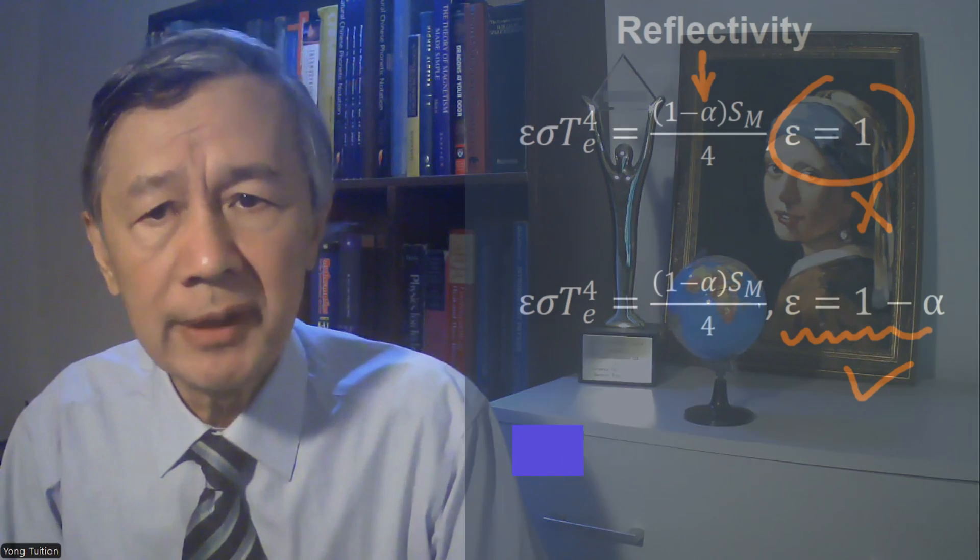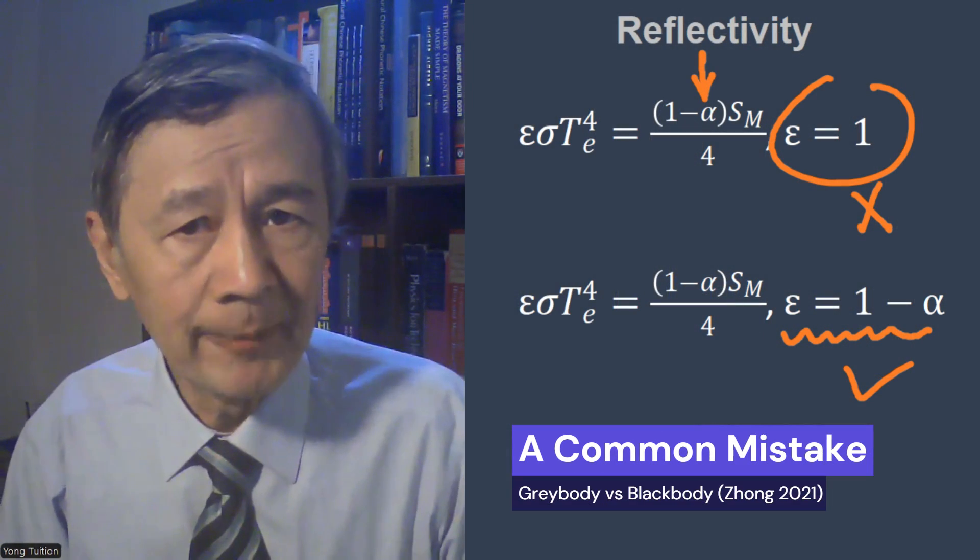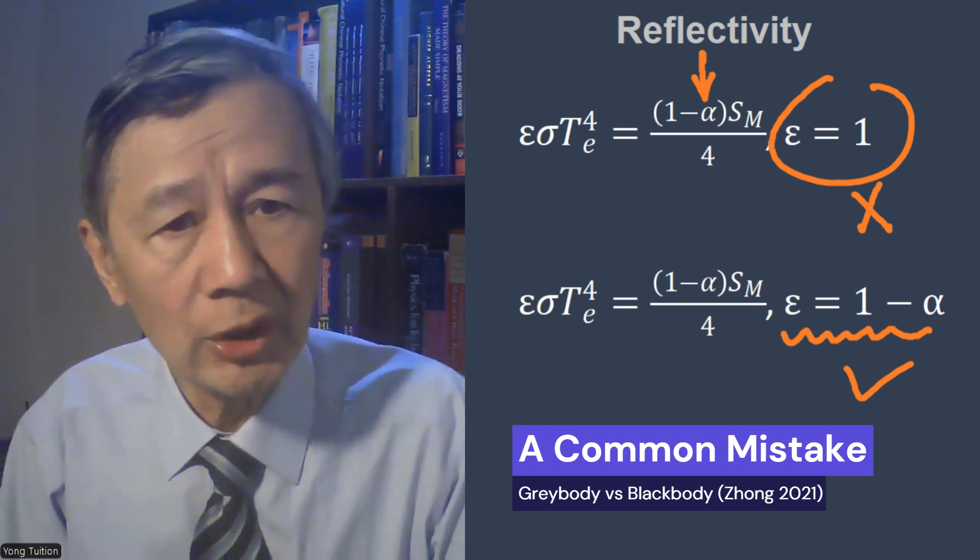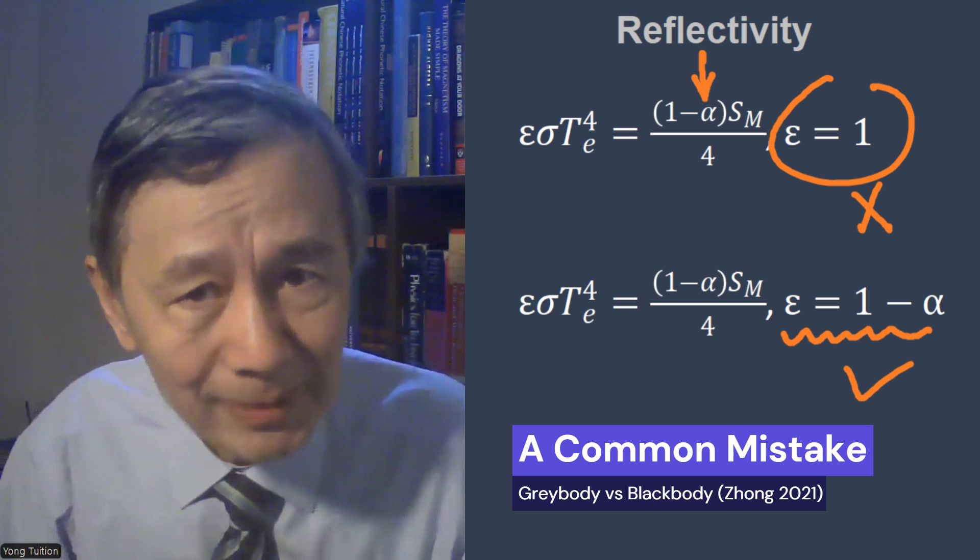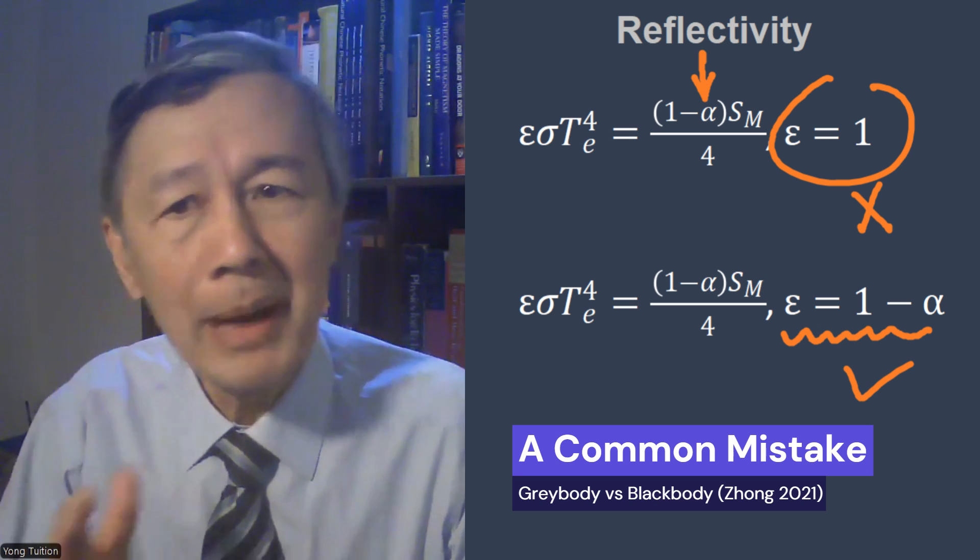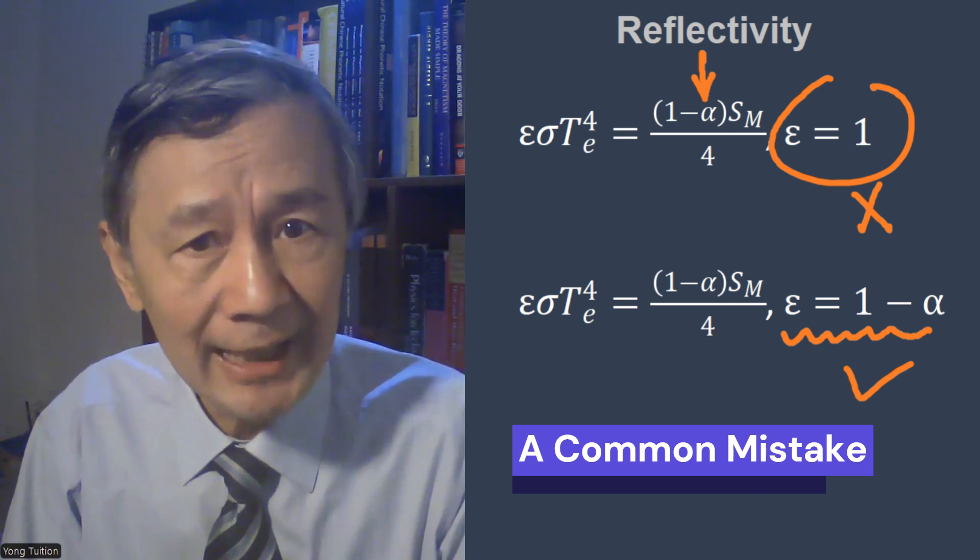However, they made a conceptual mistake in obtaining the mean surface temperature in the absence of greenhouse gases. As I pointed out a few years ago, one cannot treat a planet as a black body when its reflectivity is not zero. Instead, one can treat it as a grey body with emissivity equal to 1 minus albedo, or reflectivity.